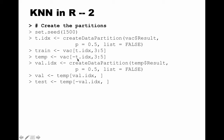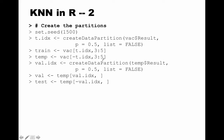Now we partition temp into validation and test. Since each should be 25 percent of the original, that's 50 percent of what's left in temp. So we set temp = vac[-t.idx, ...], then create val.idx using createDataPartition on temp$result with p=0.5 and list=FALSE. Finally, val = temp[val.idx, ] and test = temp[-val.idx, ]. We now have all three partitions.